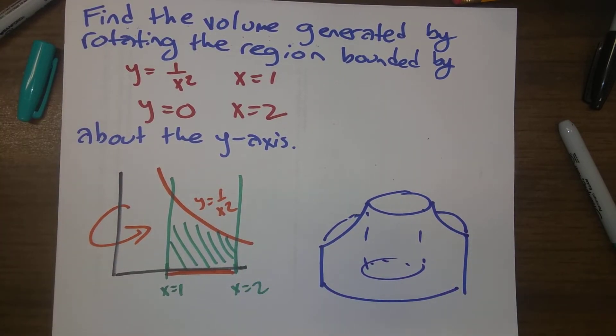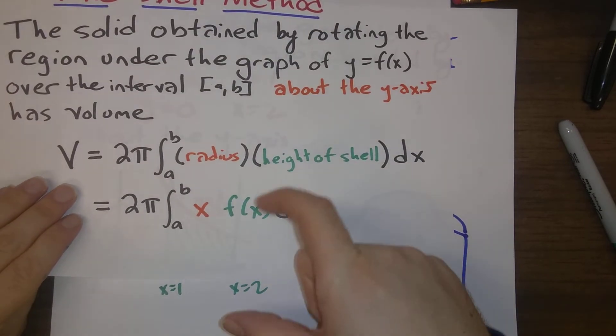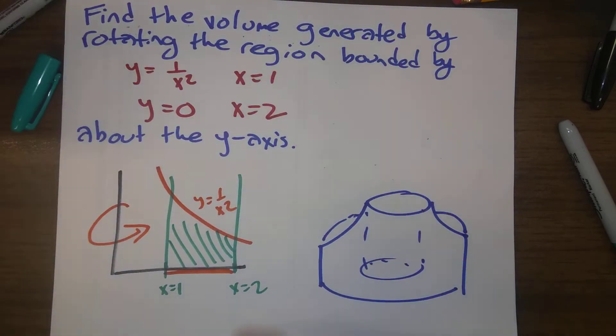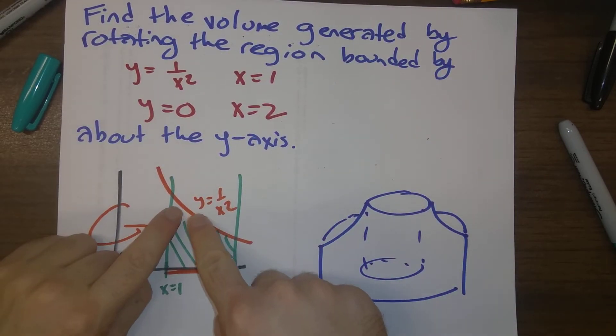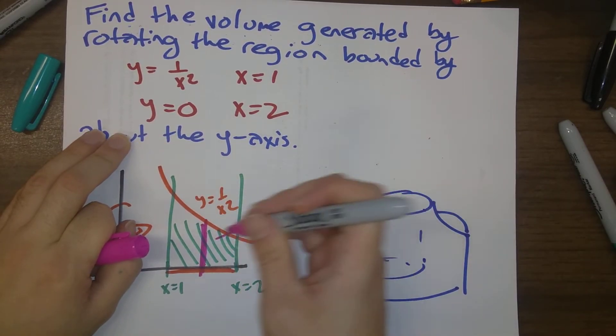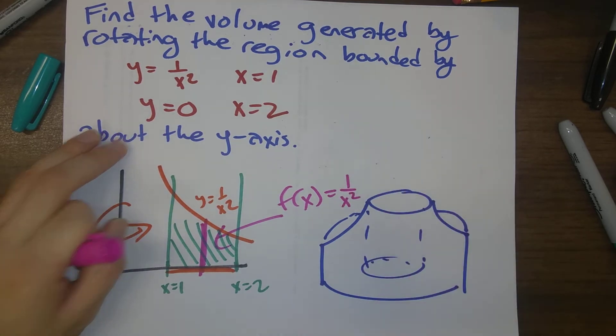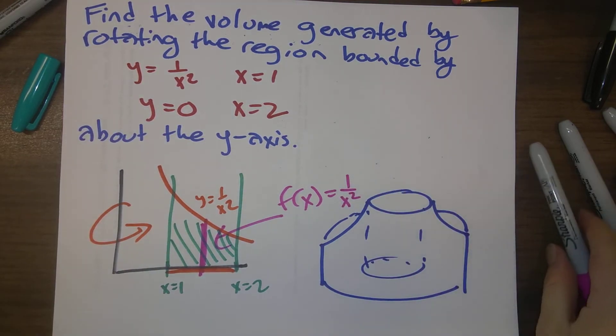Here's the setup. So the most important thing is figuring out what is the f(x) here. That's the height of the shell. And that's just going to be 1 over x squared minus 0. So here we see that f(x) is just going to be 1 over x squared minus 0, which is just 1 over x squared.